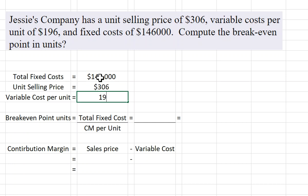And so total fixed costs we just said was $146,000. The hard part here is calculating the contribution margin per unit.